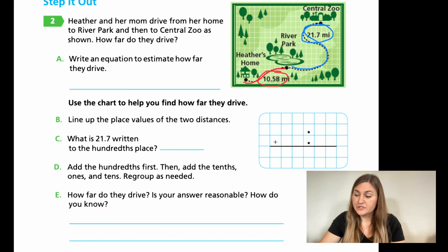So for A, you want to write an equation to estimate how far they drive. Remember, this is just estimating. So what are those decimals really close to? So 10.58, what benchmark is that closest to? And then 21.7. Remember, 0.7, I would actually write it as 0.70. Because if you need a second place value, see it as 70. What is that close to in the benchmark?